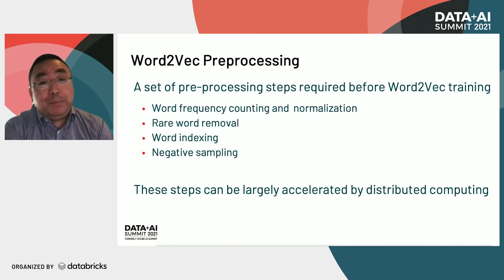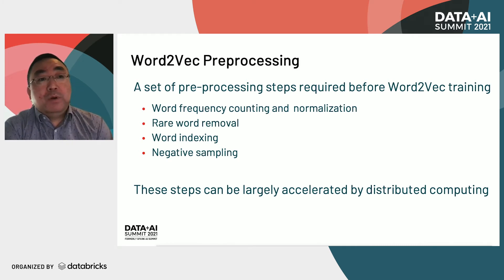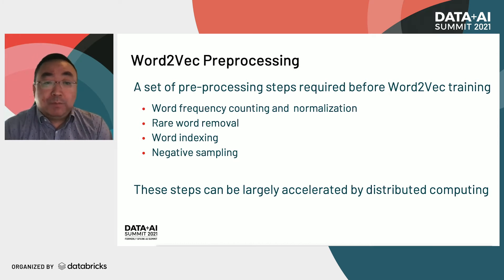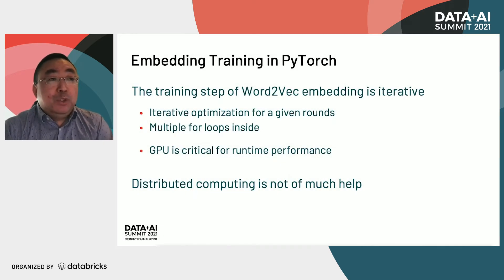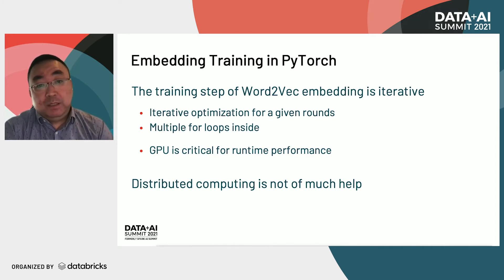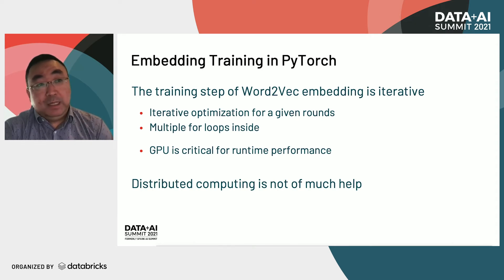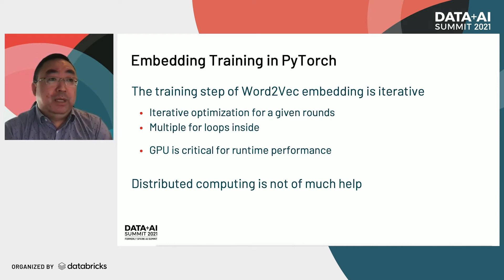This diagram shows the PyTorch node2vec process. It requires a word2vec preprocessing step to quickly generate all the relevant information and data before moving to the PyTorch embedding training step. The word2vec preprocessing step contains a set of tasks — for example, count and normalize word frequencies, remove rare words, index words, and conduct negative sampling. All these tasks are highly parallelizable and can be accelerated by distributed computing. The embedding training step is an iterative process with a maximum number of iterations and contains multiple for loops inside. A GPU is critical for runtime performance in this step, and distributed computing offers much less help because it's iterative and each step relies on the previous step's results.